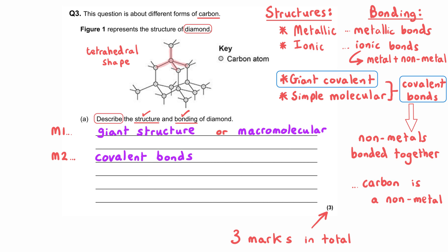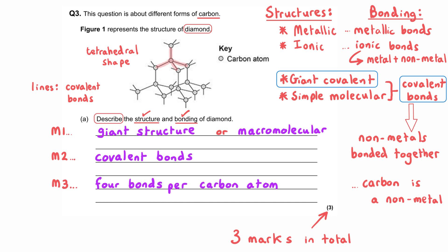You can see that all of the carbon atoms have four lines coming out of them, and each of these lines represents a covalent bond, meaning each carbon atom has four covalent bonds. Even the end ones — even though we're not shown all the carbon atoms that one is bonded to — we still see four lines. In a diagram like this, lines represent covalent bonds.